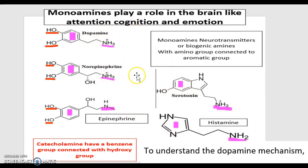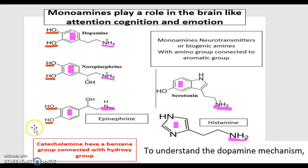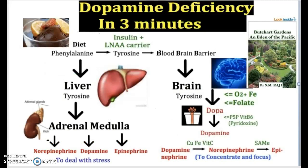Out of the five monoamines, three are subcategorized with the name catecholamine. These also have benzene groups connected with hydroxy groups, and they are epinephrine, norepinephrine, and dopamine. Just remember these three are in their own subcategory.